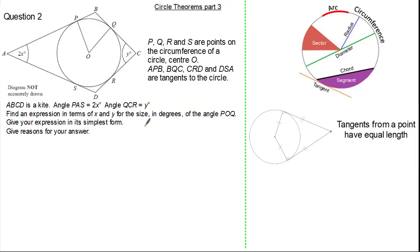Now let's look at a harder exam question. It states P, Q, R and S are points on the circumference of a circle with centre O. AP, BQ, CR and DS are tangents to the circle. ABCD is a kite. Angle PAS makes angle 2X, and angle QCR makes angle Y. The question wants us to find an expression in terms of X and Y for the size in degrees of angle POQ, in its simplest form, with reasons.